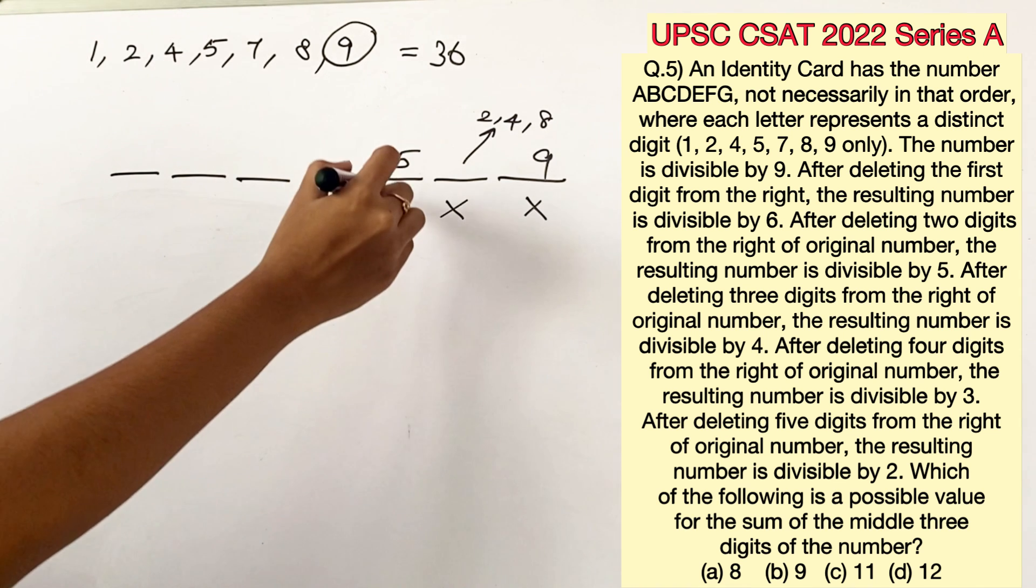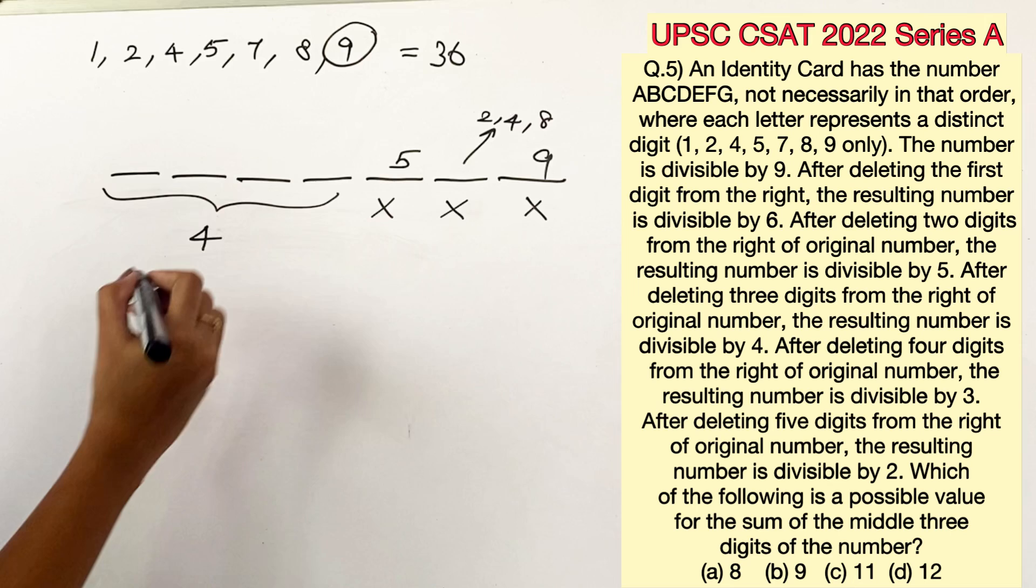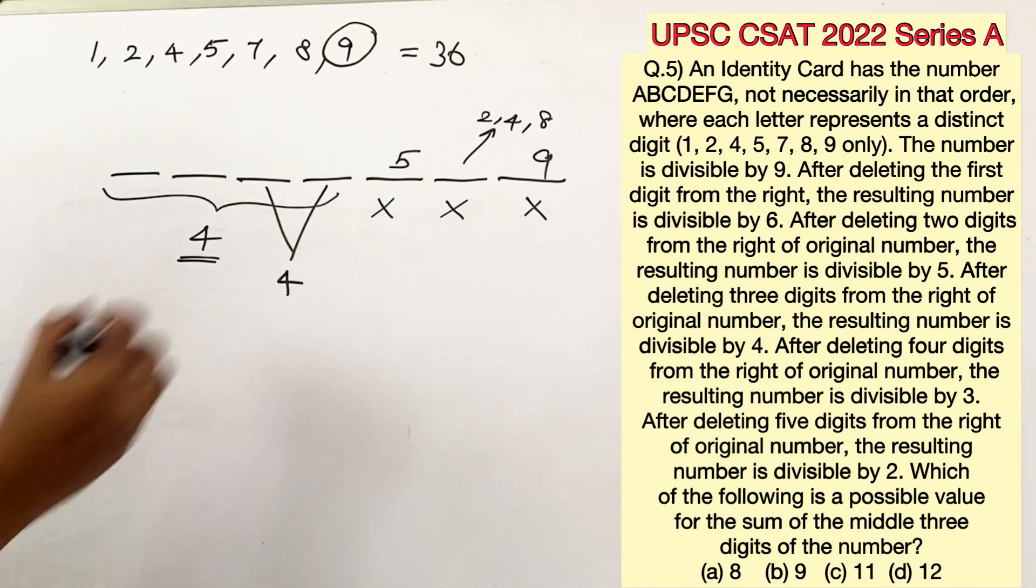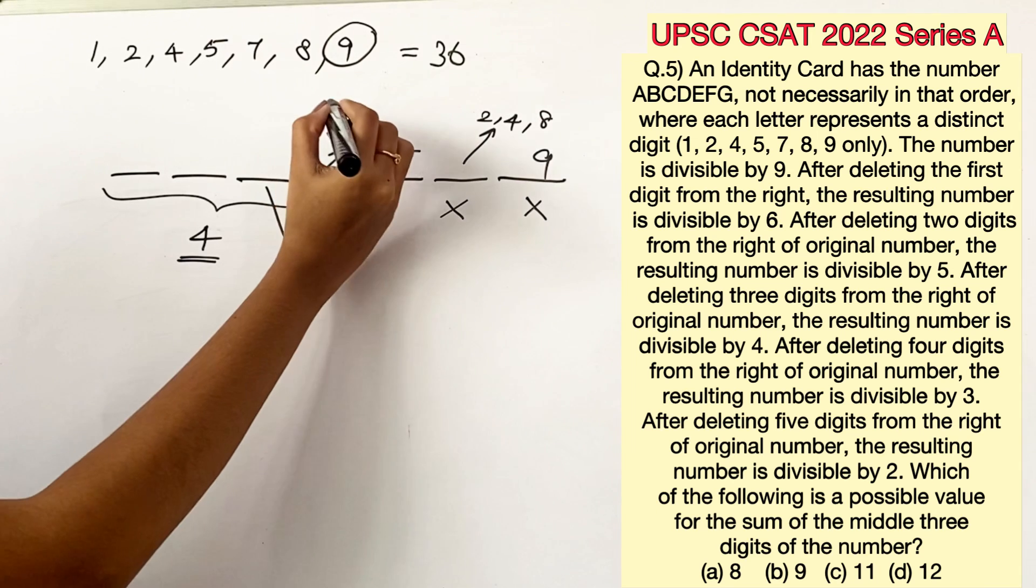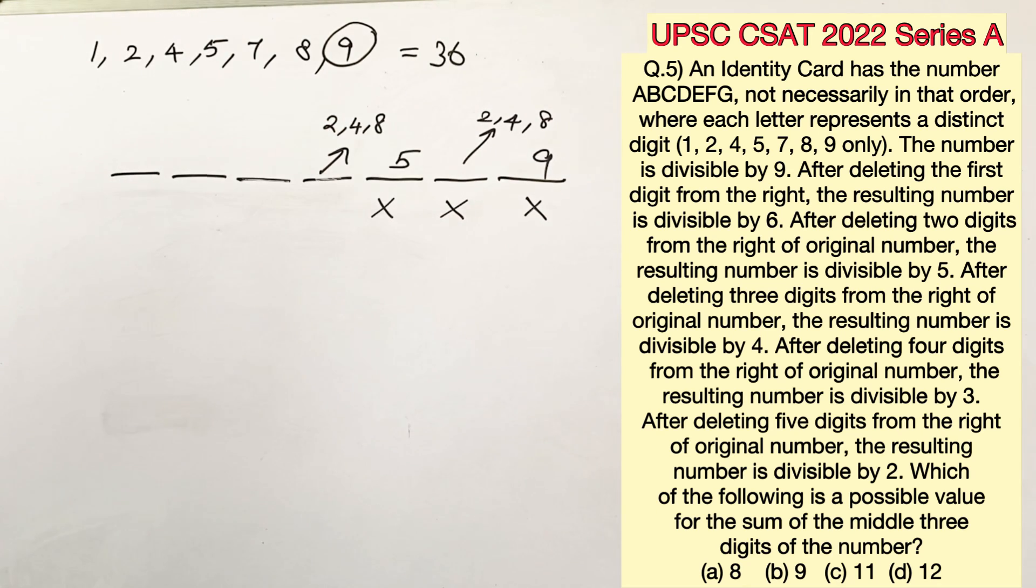The next statement says after deleting 3 digits from the right the resulting number is divisible by 4. For a number to be divisible by 4 we know that the last 2 digits should be divisible by 4. And we also know that the number should be an even number. So this should be either 2, 4 or 8.